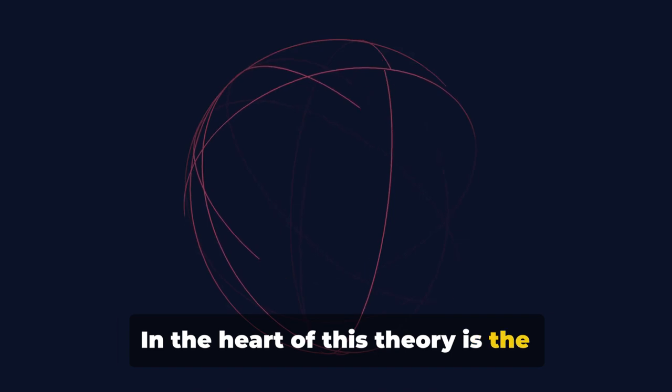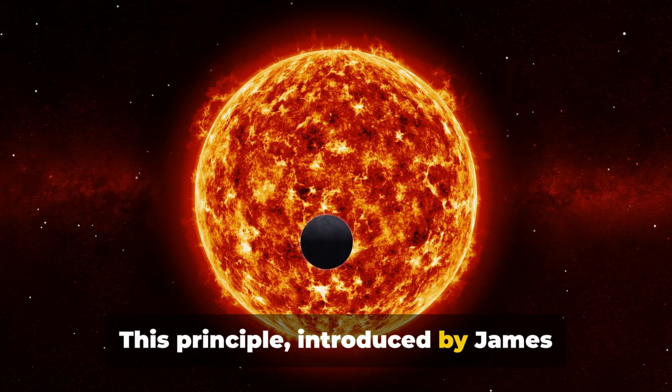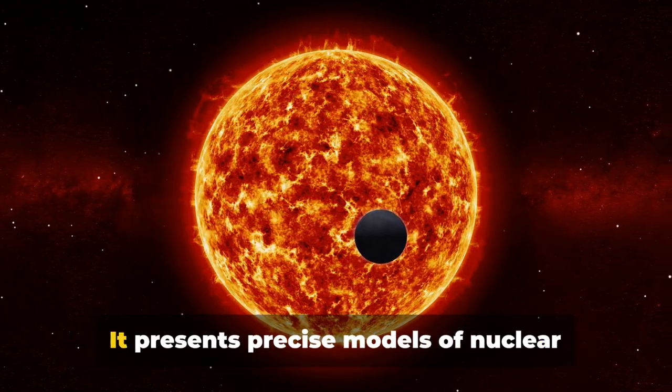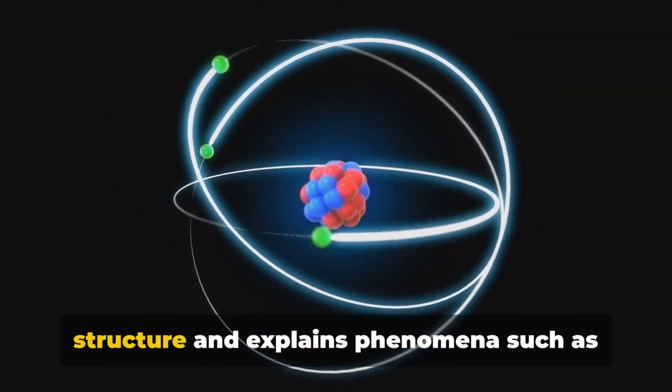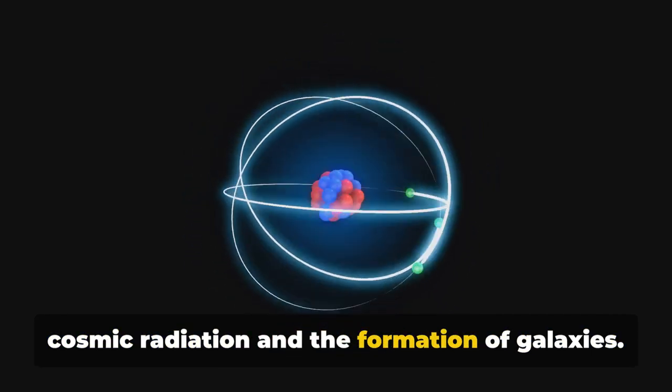In the heart of this theory is the principle of circle-on synchronicity. This principle, introduced by James Carter, challenges traditional theories like the Big Bang and general relativity. It presents precise models of nuclear structure and explains phenomena such as cosmic radiation and the formation of galaxies.